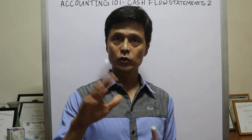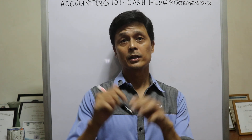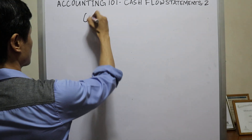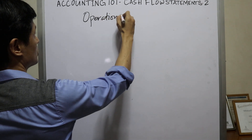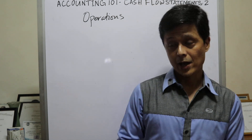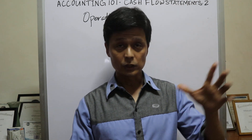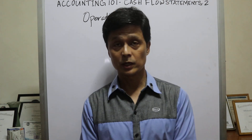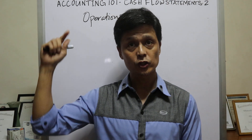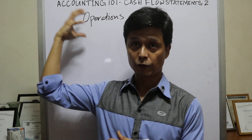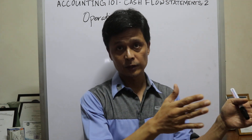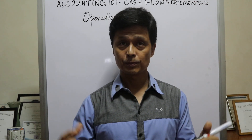Like I said last time, we're going to focus on the operations — cash flow from operations. There are three activities in a cash flow: operations, financing, and investing. Operations being the first one of the three, it talks about the main activity of the company.